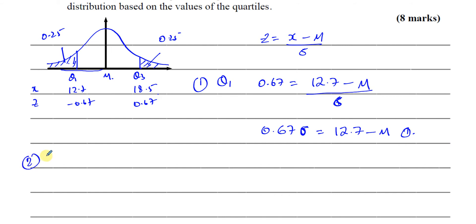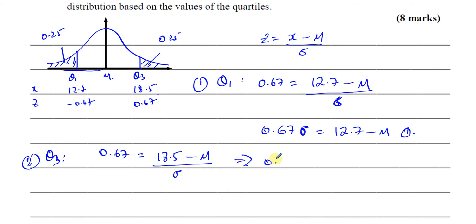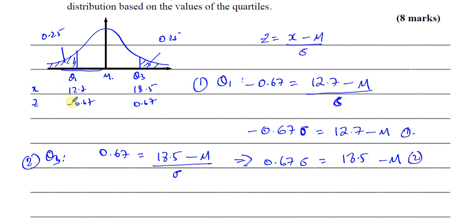From the upper quartile Q3 I get a second equation: 0.67 times sigma equals 18.5 minus mu. So now I have this pair of simultaneous equations. If I add the two equations, the sigma terms will cancel because negative 0.67 sigma plus 0.67 sigma equals zero.